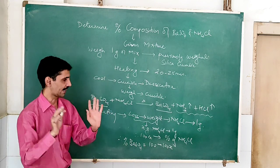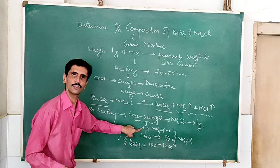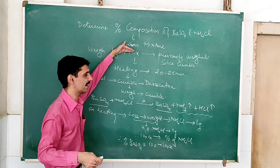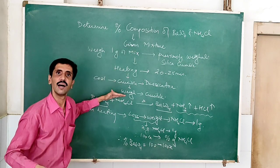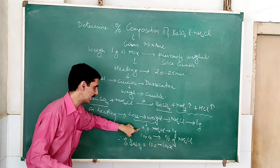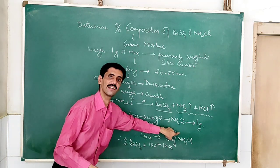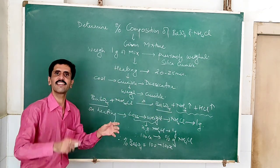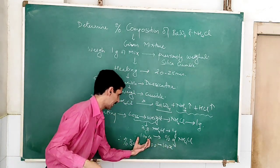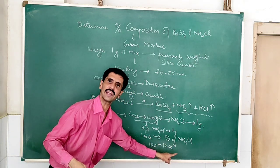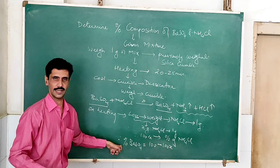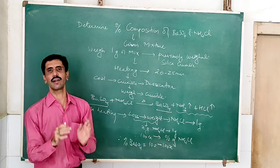In simple words: suppose we get X as 0.2 grams — that is the loss in weight. How to find the loss in weight: we have the initial weight before heating and we have the weight after heating, and we take the difference. Suppose it comes out to be 0.2 grams. So 0.2 grams of ammonium chloride is present in one gram, meaning the percentage is 0.2 × 100 = 20%. So 100 minus 20 gives you 80%, which is the percentage composition of barium sulfate.